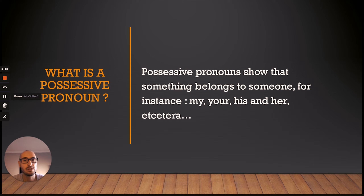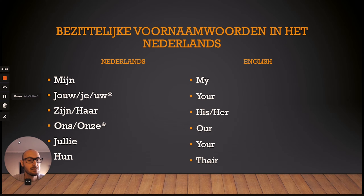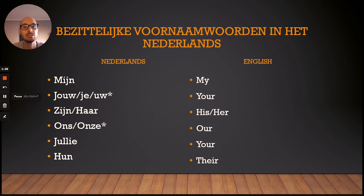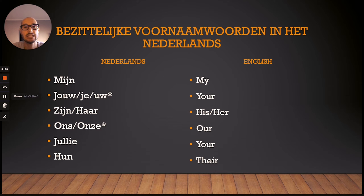Let's get a little bit more specific and I'll show you the different possessive pronouns we have in Dutch. So the bezittelijke voornaamwoorden in het Nederlands — that is the title, which means the possessive pronouns in Dutch. On the left side you see Nederlands, that of course means Dutch, and on the right side you see English — that's the English version.